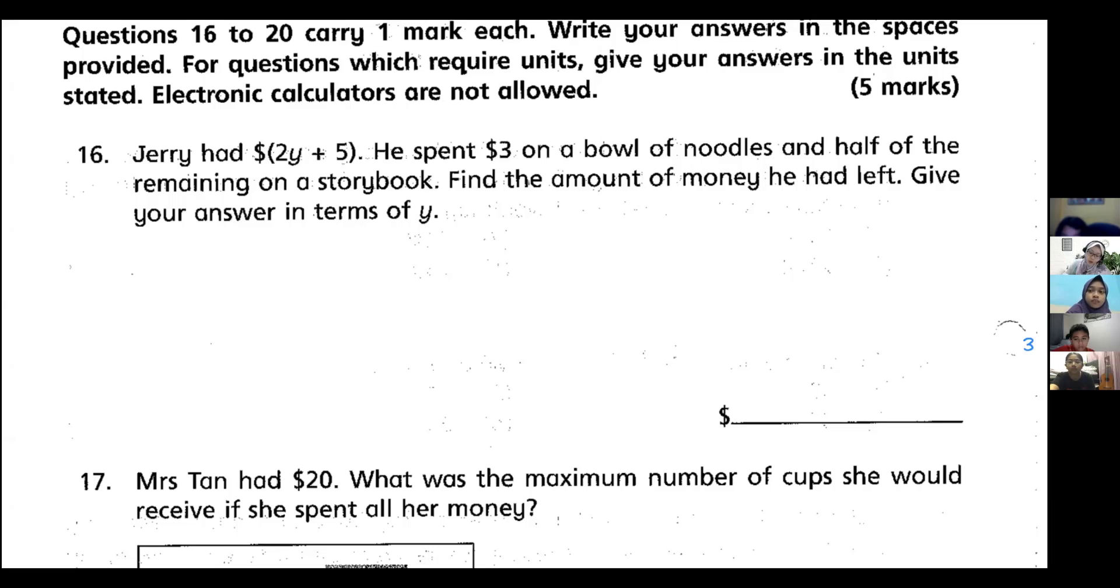For number 16, Jerry had $(2y + 5). He spent $3 on a bowl of noodles and half of the remaining on a storybook. Find the amount of money he had left. Give your answer in terms of y, so you're going to leave it as y - you are not going to actually solve it, you're just going to give an expression. First things first, you must find out what is the remainder.